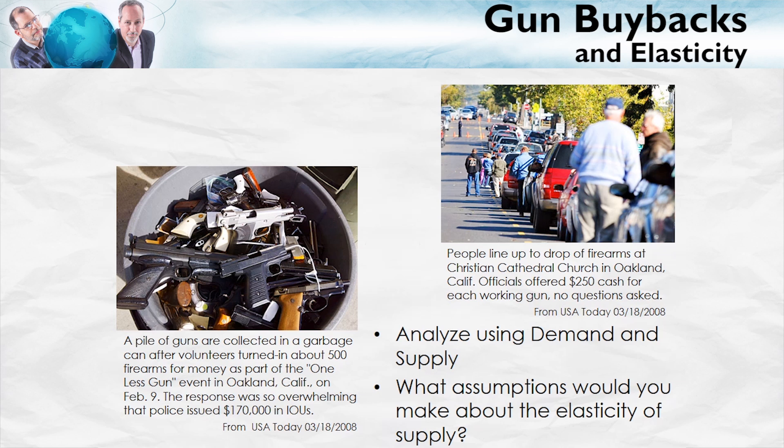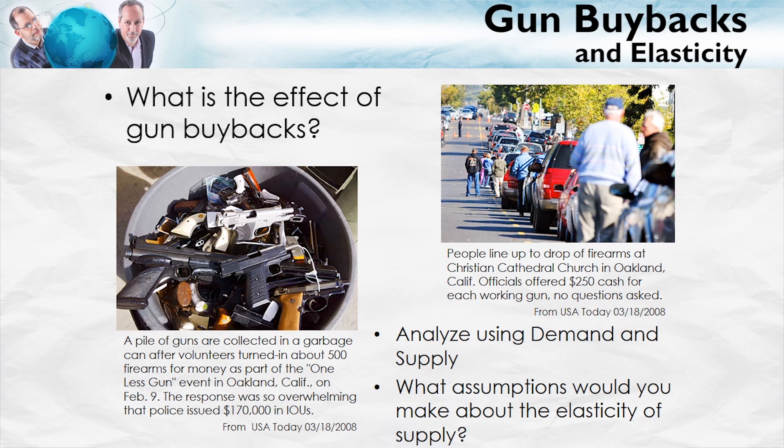Let's look at another important question we can analyze using demand and supply: what is the effect of gun buybacks? These buybacks are often sponsored by local governments, the local police, the local mayor, and so forth. In this buyback held in Oakland, officials offered $250 cash for each working gun, no questions asked. They collected the guns and melted them down — the idea was to get guns off the street. They ended up collecting about 500 guns. These buybacks are fairly common throughout the United States at the local level.